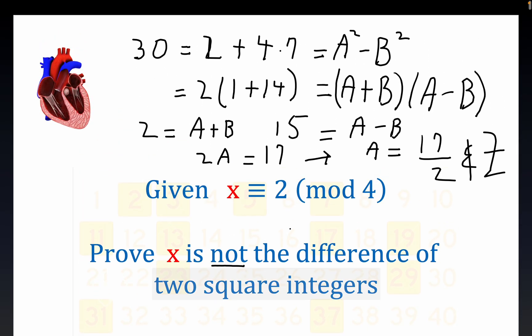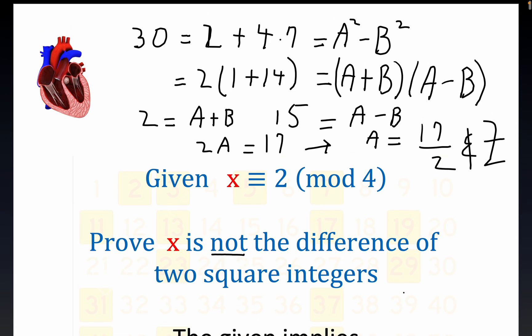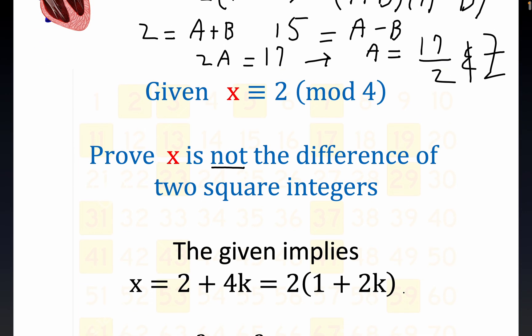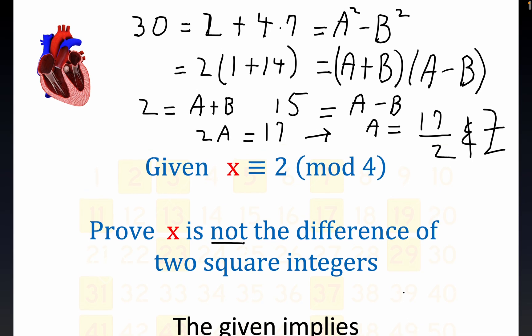If x is congruent to 2 modulo 4, x is not the difference of two square integers, folks. There's always something that's slightly unsettling about these proofs by contradiction, you know, but in any event, hopefully that was convincing. I liked it. Thank you for viewing.